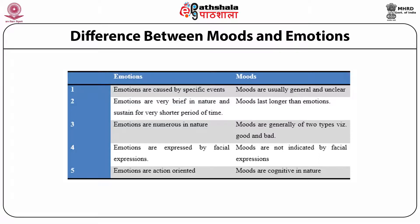Emotions are very brief in nature and sustained for a shorter period of time. In comparison, moods last longer than emotions. Emotions are numerous in nature, whereas moods are generally of two types: good and bad.